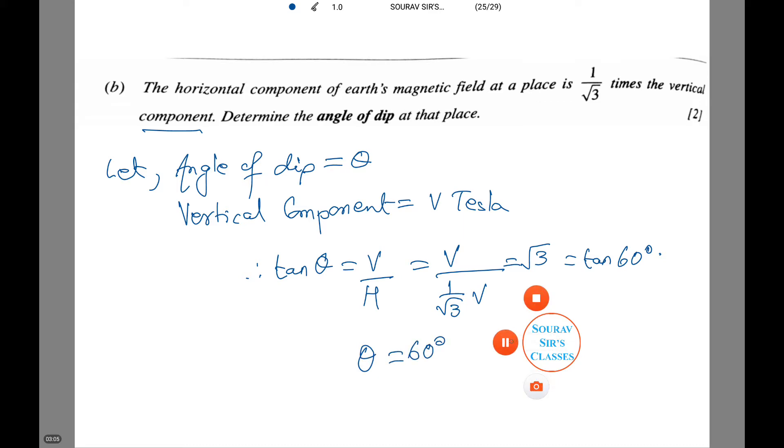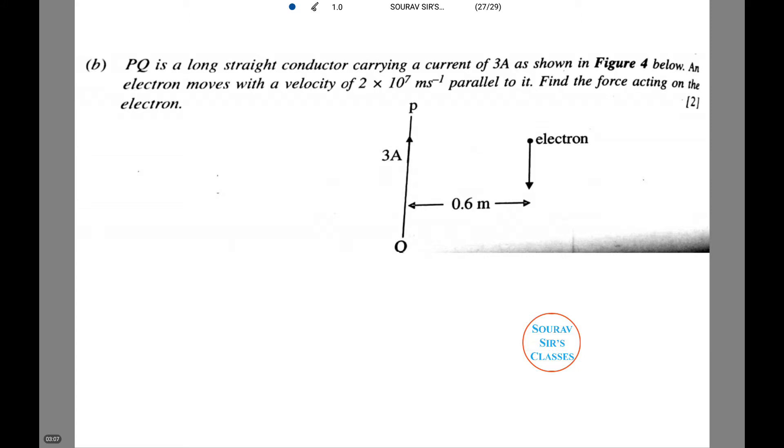Now let's move on to the next question. PQ is a long straight conductor carrying a current of 3 Amperes as shown in Figure 4. An electron moves with a velocity of 2 into 10 to power 7 meters per second parallel to it. We need to find the force acting on the electron. Let's see what the given information are.